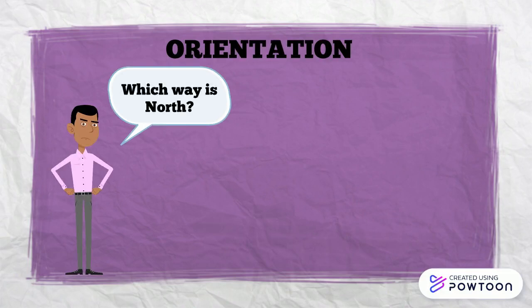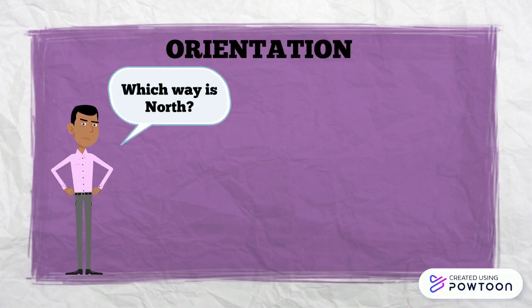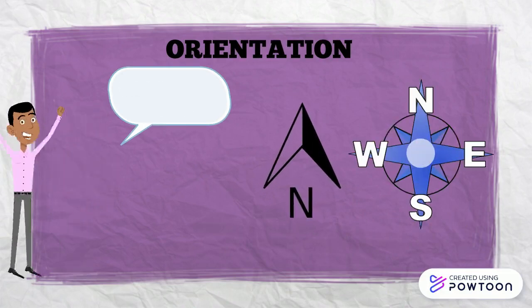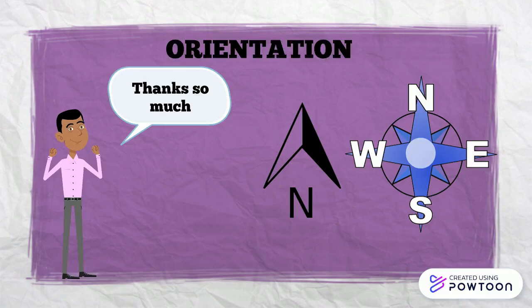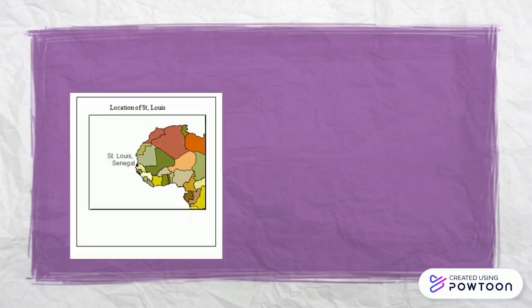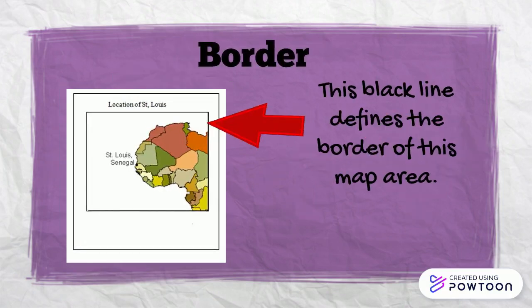Orientation. A map should indicate which way is north. Commonly this is done by a north arrow or a compass rose. A border identifies exactly where the mapped area begins and stops.